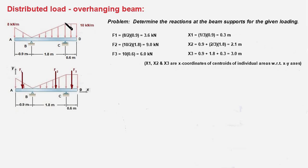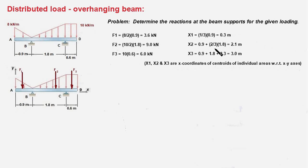For the second triangle, the area under the load curve is 10 kilonewtons per meter times 1.8 meters divided by 2, so F2 = 9 kilonewtons. Its centroid's distance from point A is two-thirds from this point plus 0.9, which gives 0.9 plus two-thirds of 1.8, equaling 2.1 meters. So x2 = 2.1 meters from point A.